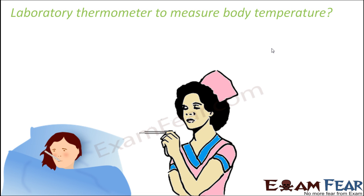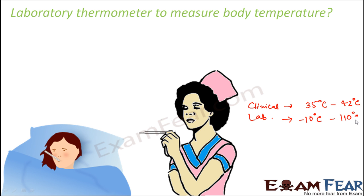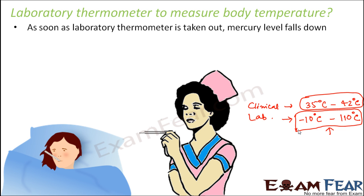To summarize why we cannot use the laboratory thermometer to measure body temperature: while the clinical thermometer measures between 35 and 42 degrees Celsius and the laboratory thermometer measures between minus 10 and 110 degrees Celsius — meaning the body temperature range does fall within the laboratory thermometer's scale — the problem is that as soon as you take the laboratory thermometer out of the substance, the mercury level immediately falls. So when you put it in a patient's mouth and then take it out, the mercury falls back and you cannot read the temperature.